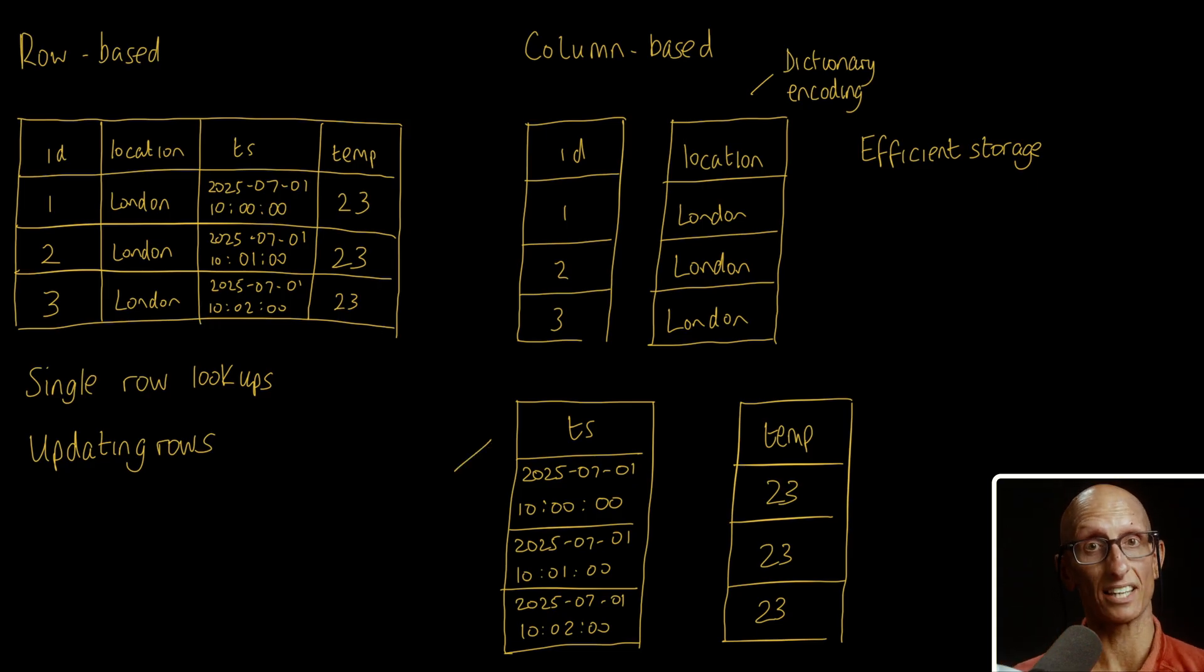The timestamps change by a small amount each time, so we could use delta encoding to store diffs from the previous timestamp for most values, rather than the full timestamp value, again saving space. And for the temperature column, we could use run-length encoding if we have the same temperature for many consecutive readings.